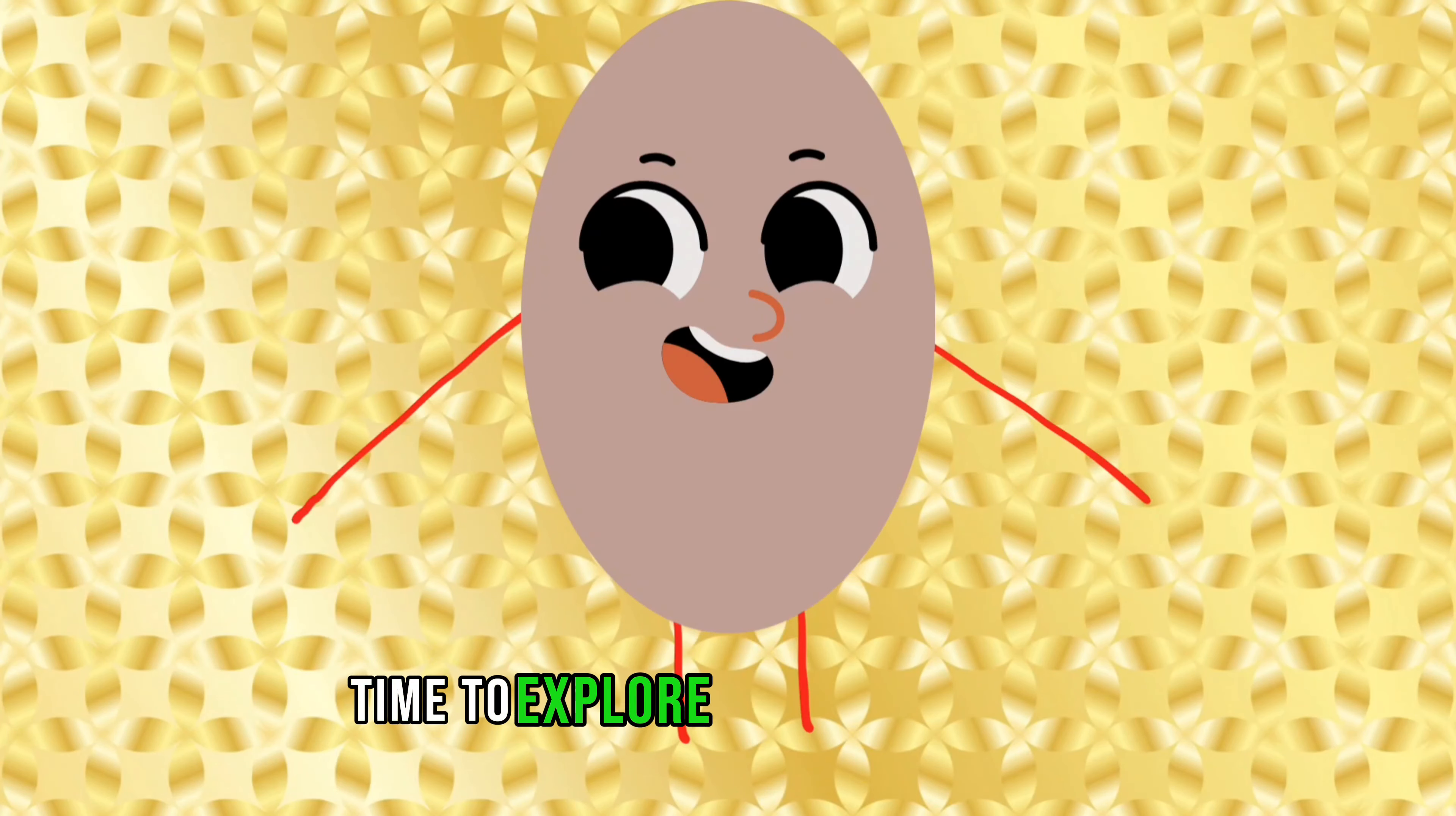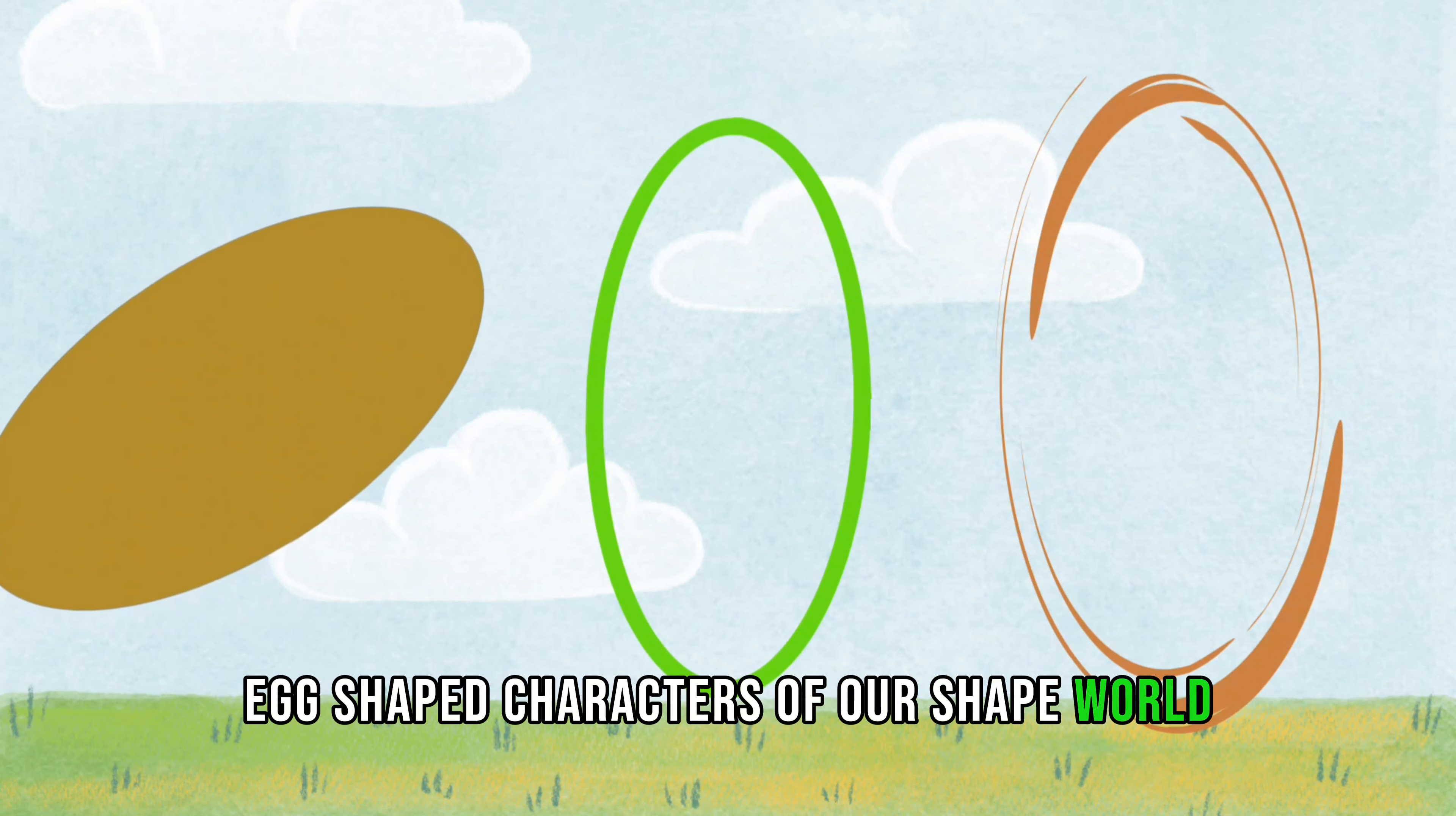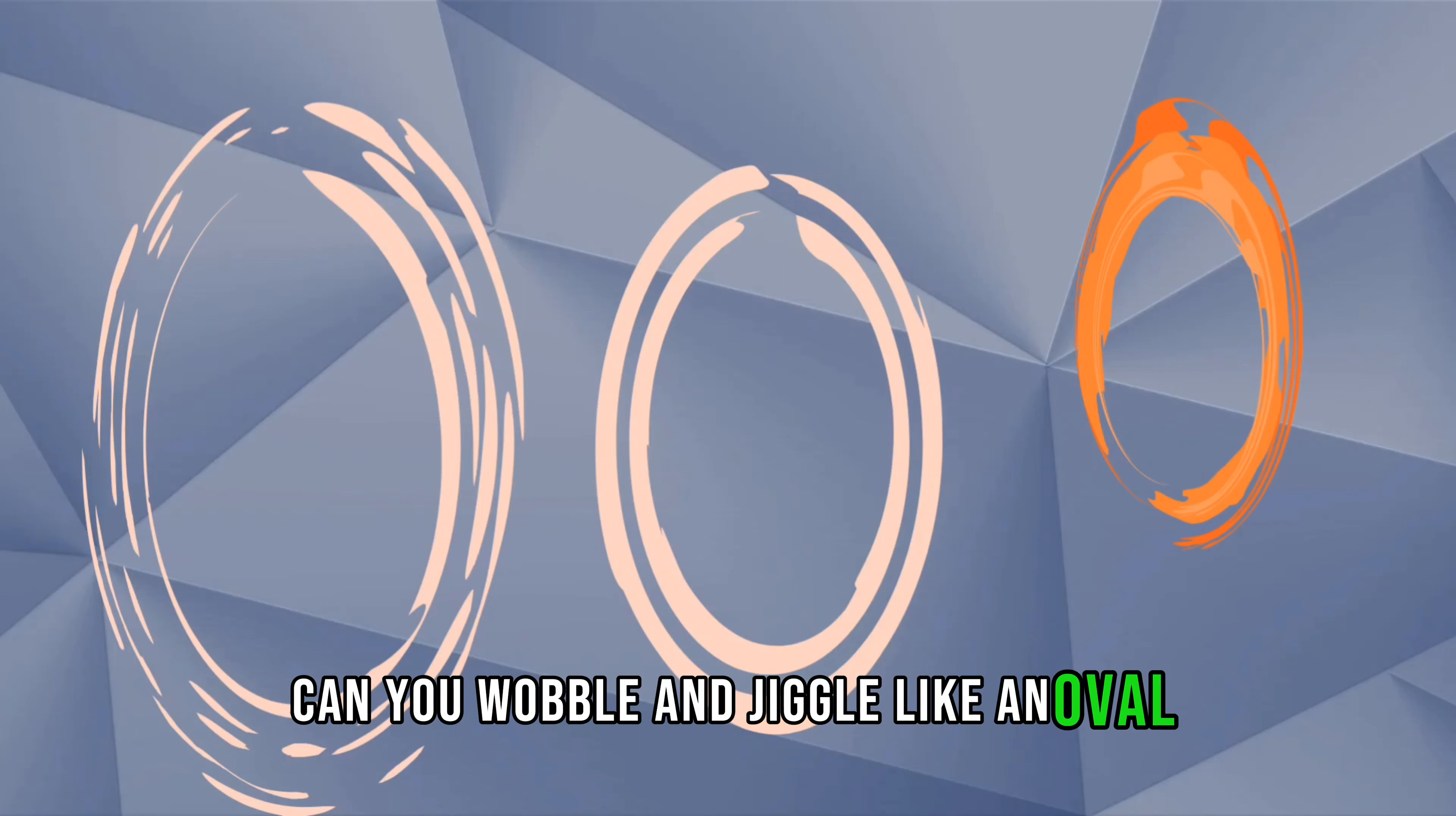Oval. Time to explore the oval orchard. Ovals are like the quirky, egg-shaped characters of our shape world. Can you wobble and jiggle like an oval? Wiggle it.